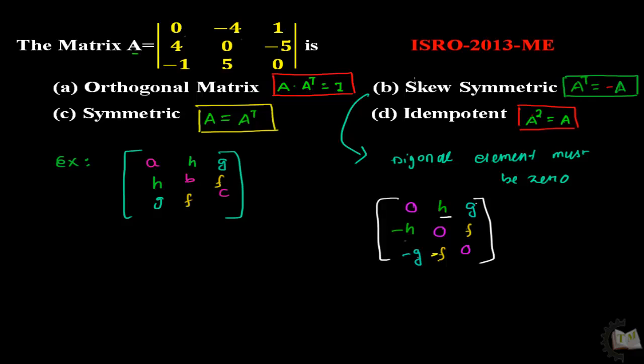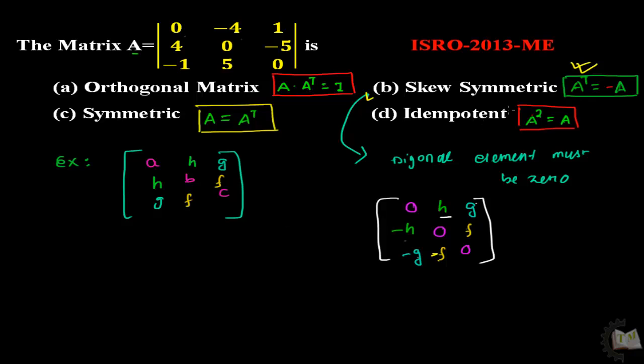It is a skew-symmetric matrix and the answer will be B. You can also calculate the orthogonal matrix by taking the transpose. Let me solve this by the formula because it is not simple to remember this format. There is also another method using this formula which will be easier for remembering.